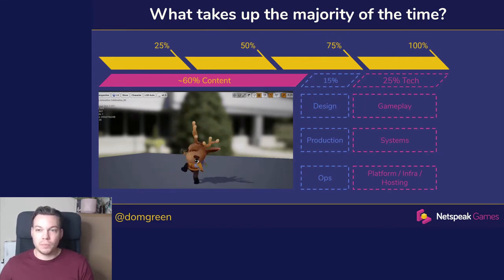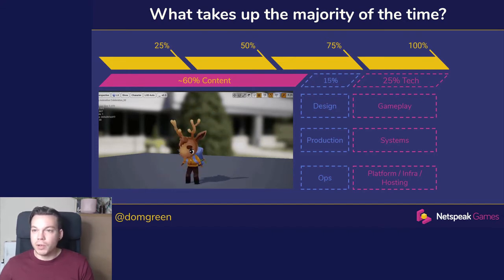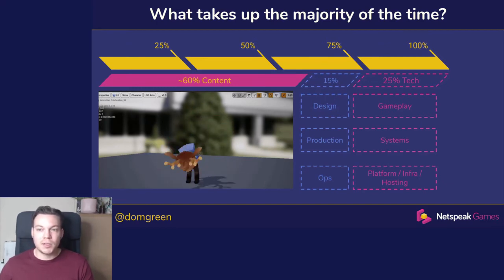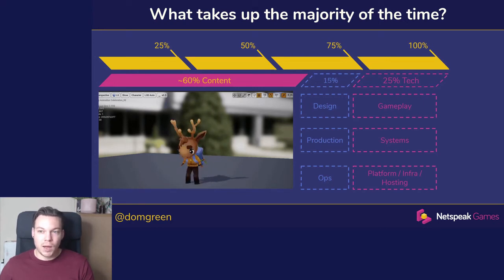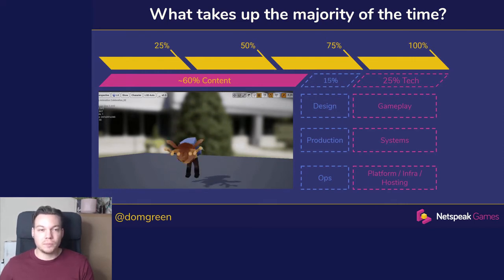Here you can see Rowan jumping for joy — he's one of the NPCs within our game. Then there's a small amount of time for design, production, and operations of the company. 25% of the time is actually spent on tech — this includes the gameplay, all the gameplay systems and things that build the game. Included within this 25% is the hosting, the infrastructure, and the platform. This is where I fit in.